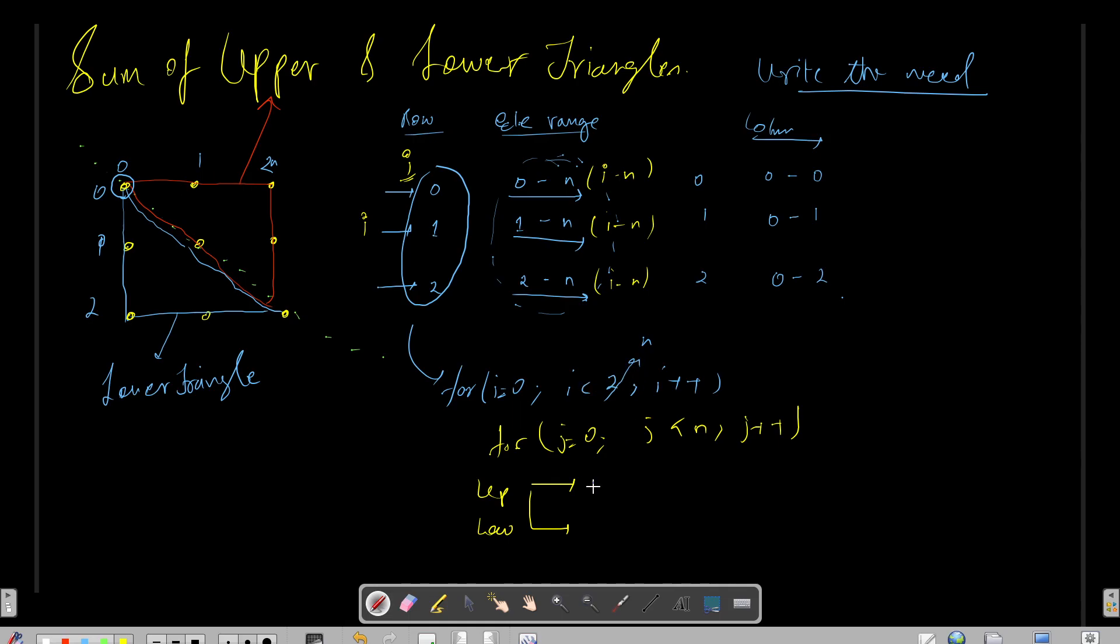Then I need the sum, let's say s1 plus equals to matrix[i][j]. At the end of this nested for loop, your s1 will have the sum of your upper triangle.